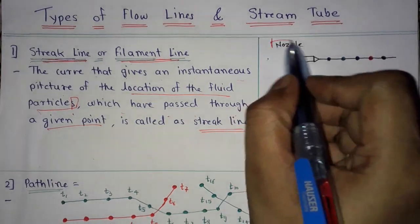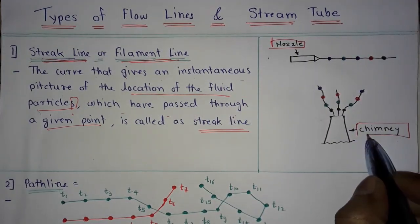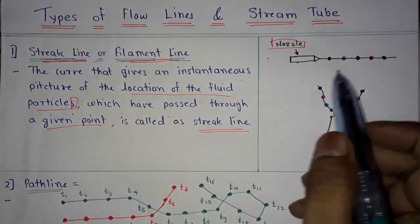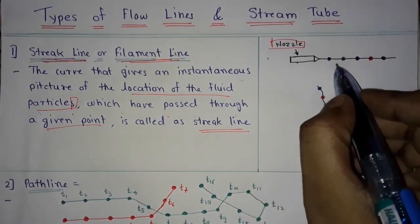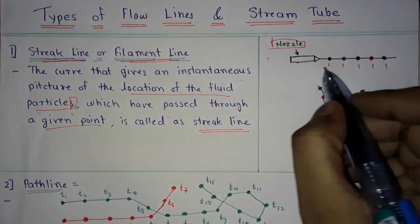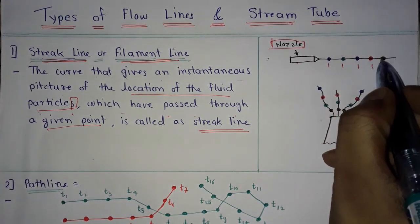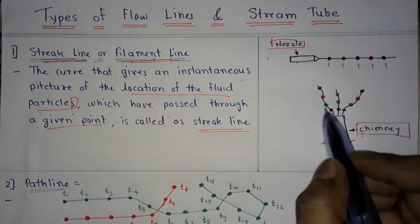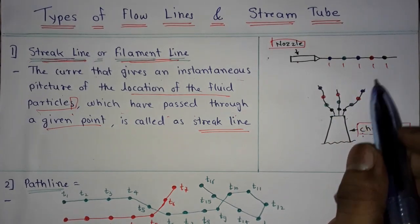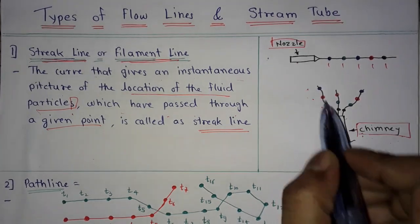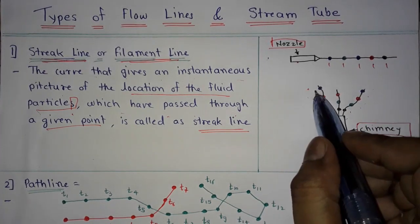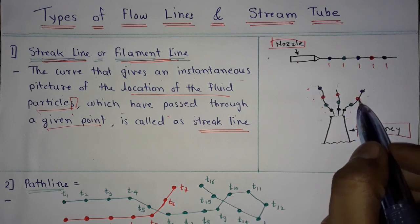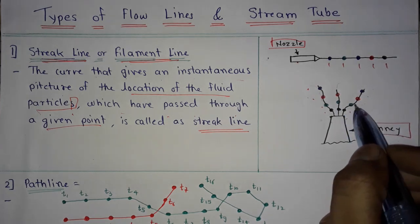We will take an example of a nozzle and a chimney. From this nozzle, smoke particles are ejected and they follow a certain path. In the chimney example, smoke comes out and different smoke particles follow different paths or curves.